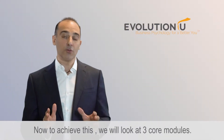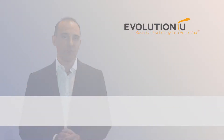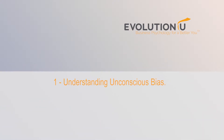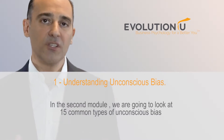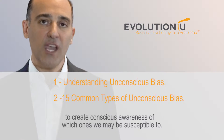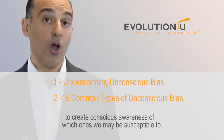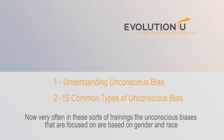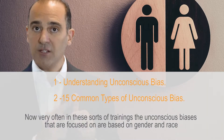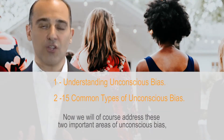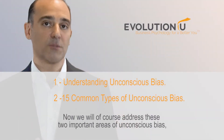To achieve this, we will look at three core modules. The first one is understanding unconscious bias — what is it, how does it manifest itself, why does it exist? In the second module, we're going to look at 15 common types of unconscious bias to create conscious awareness of which ones we may be susceptible to. Now very often in these sorts of trainings, the unconscious biases that are focused on are based around gender and race, and we will of course address these two important areas.